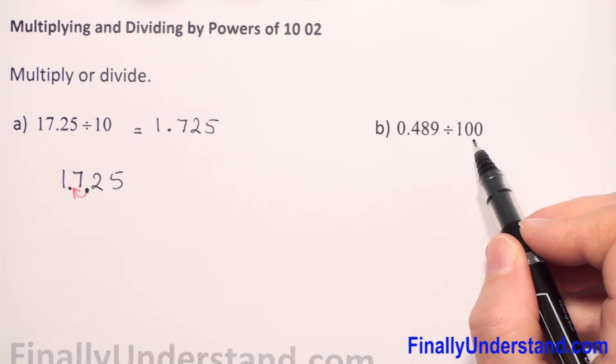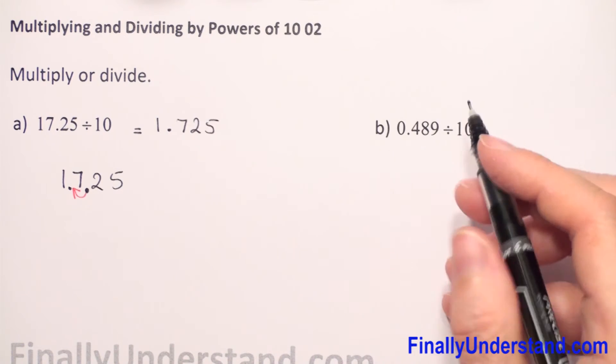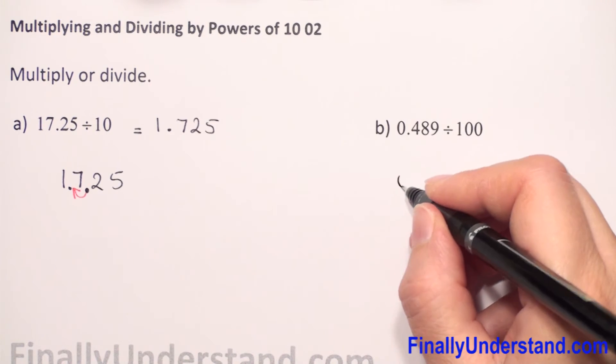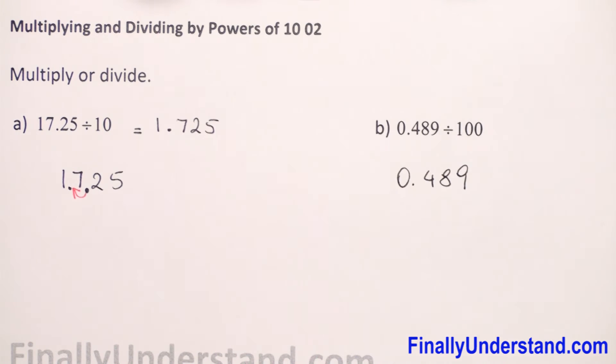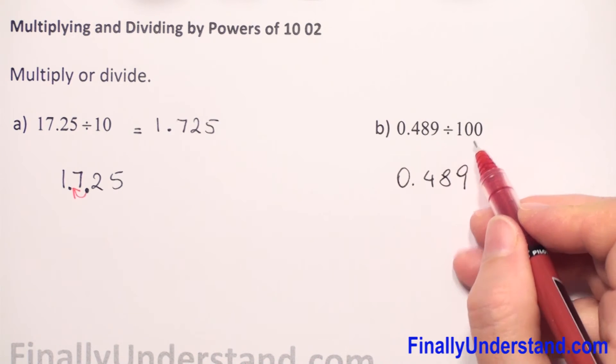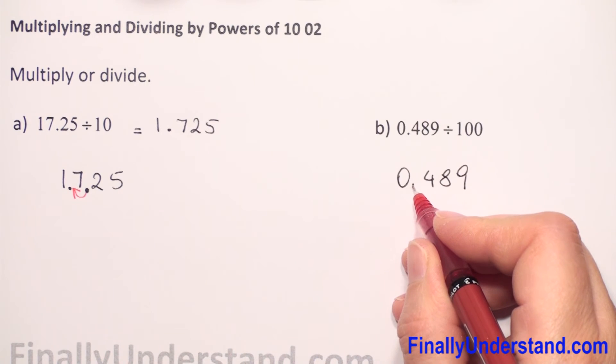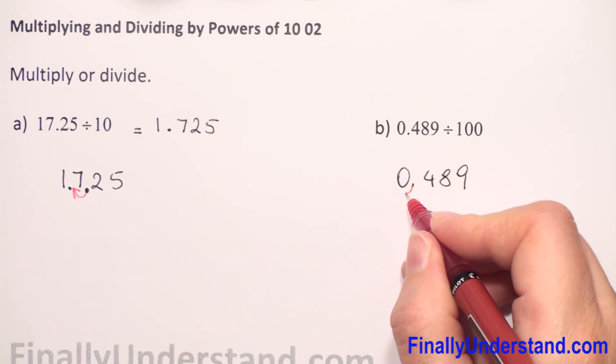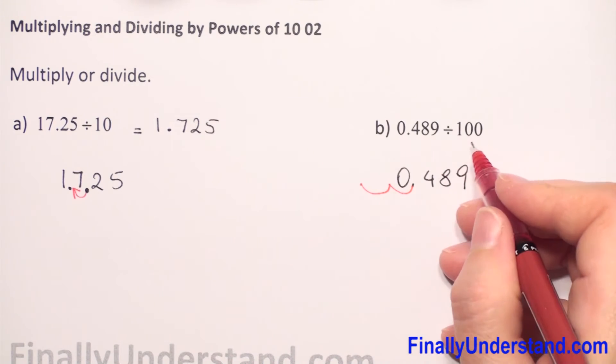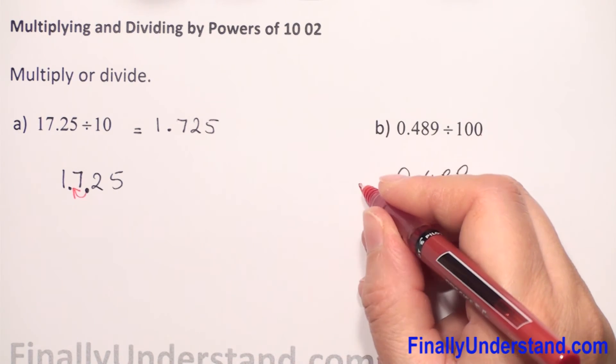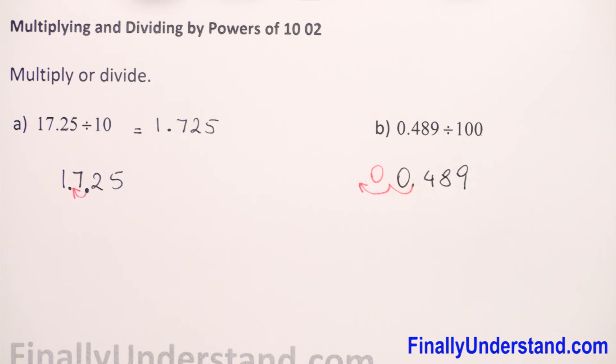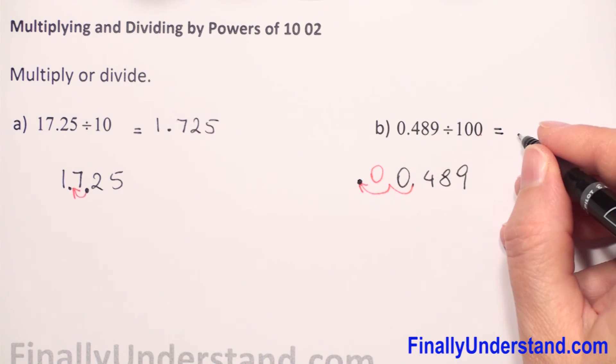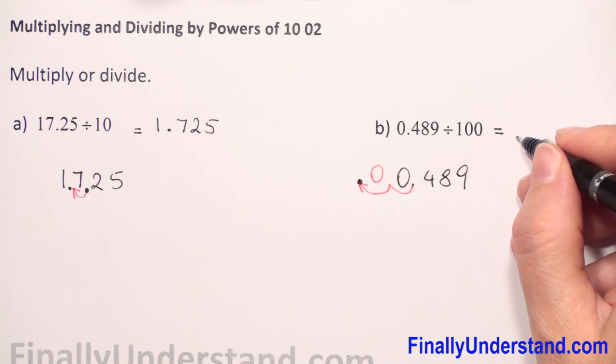Let me copy this number one more time. We have 0.489. Like I said, we first count the zeros. We have two zeros. Go to the decimal point. We move to the left because we have division—one, two places, because two zeros. We move two places, and always empty spaces we fill by zero. And the decimal point is before the second zero.